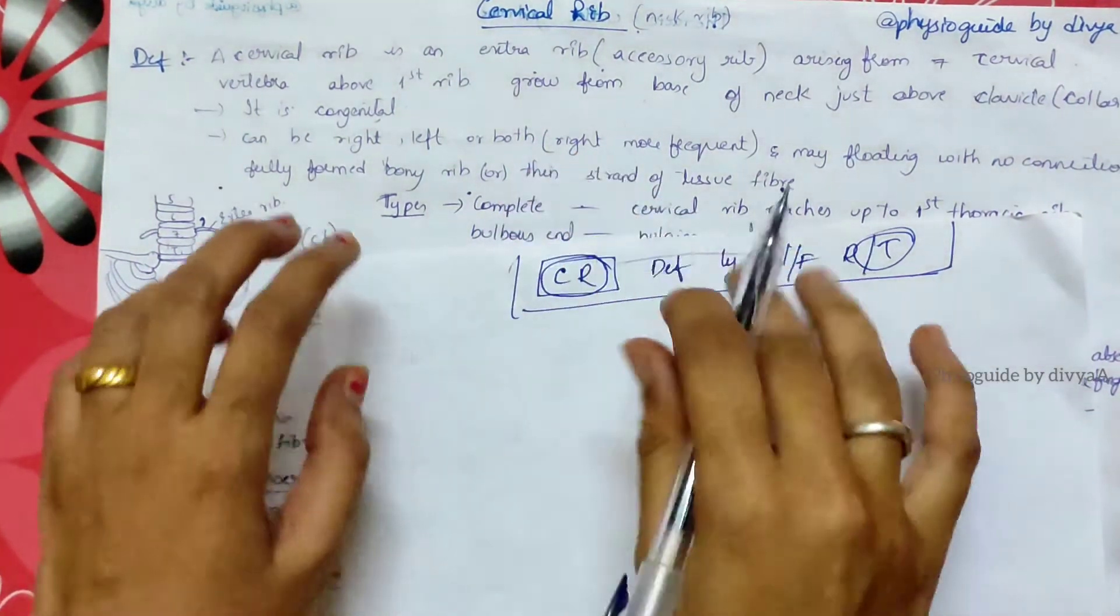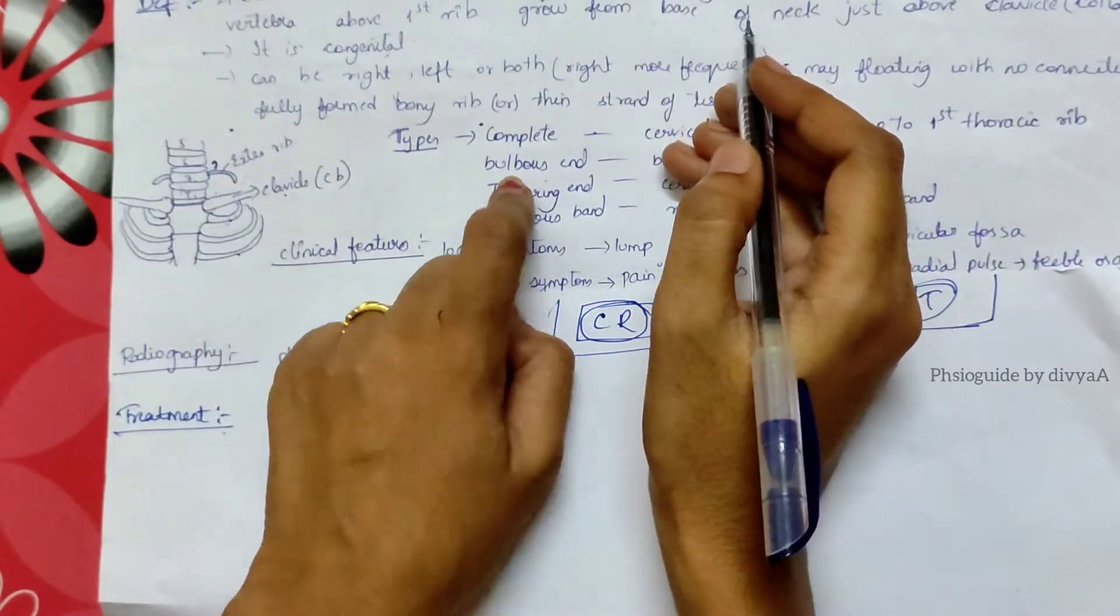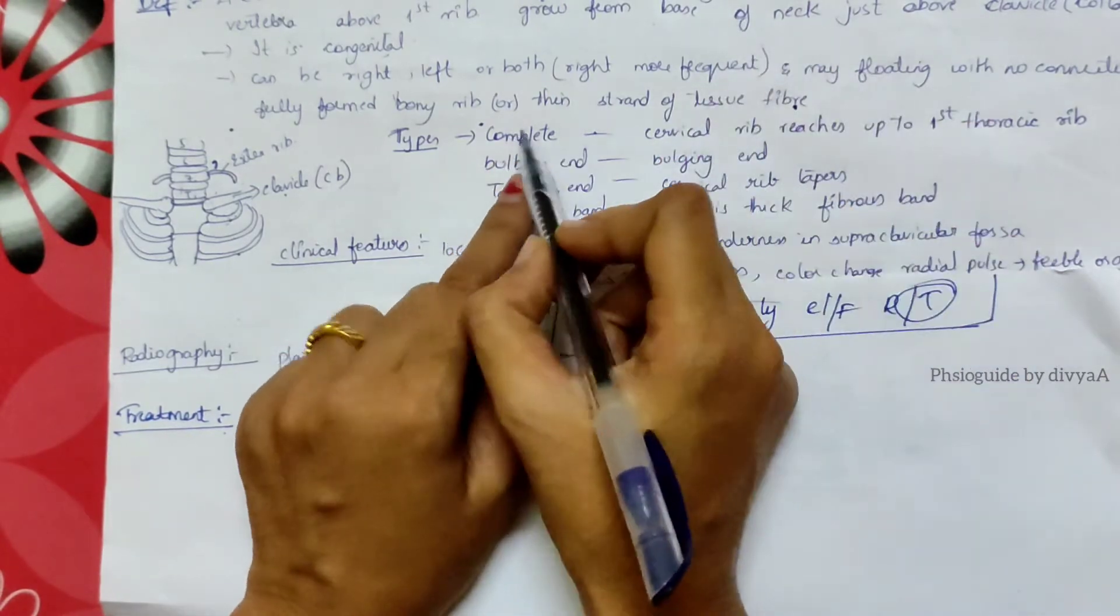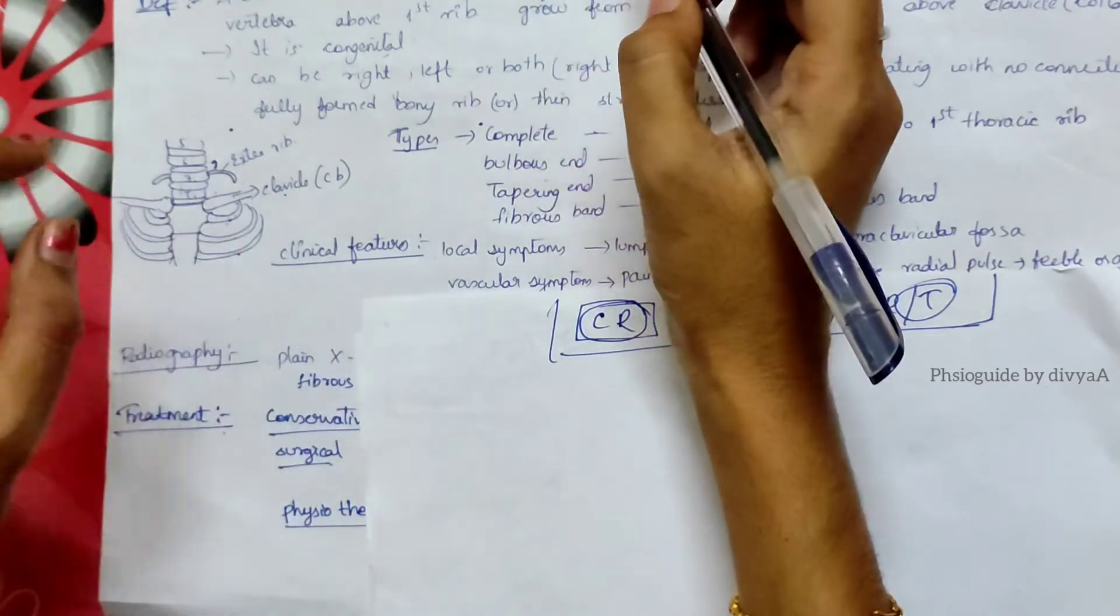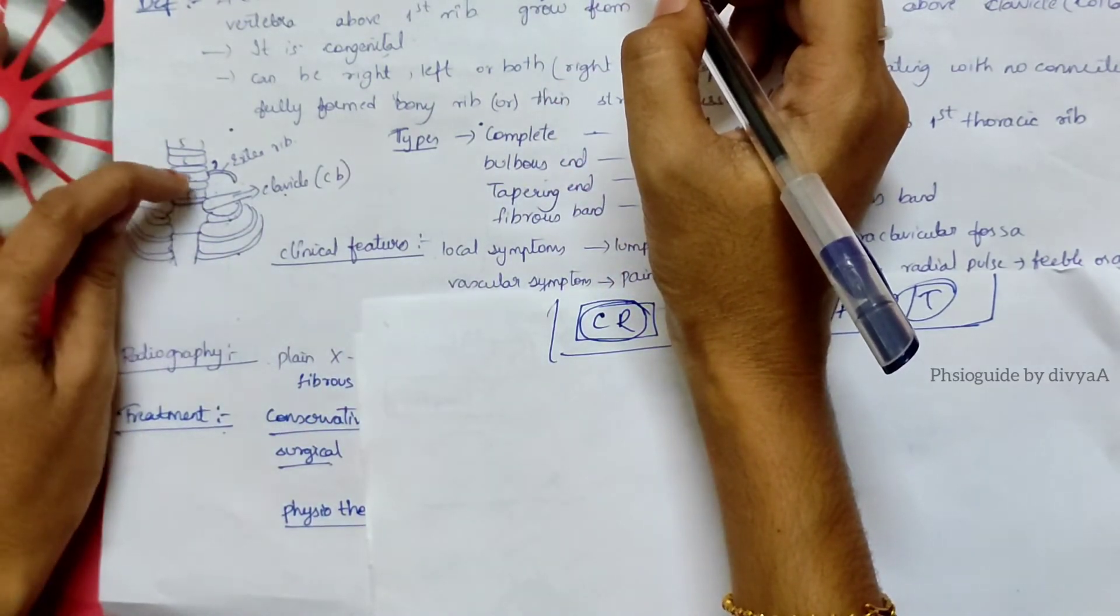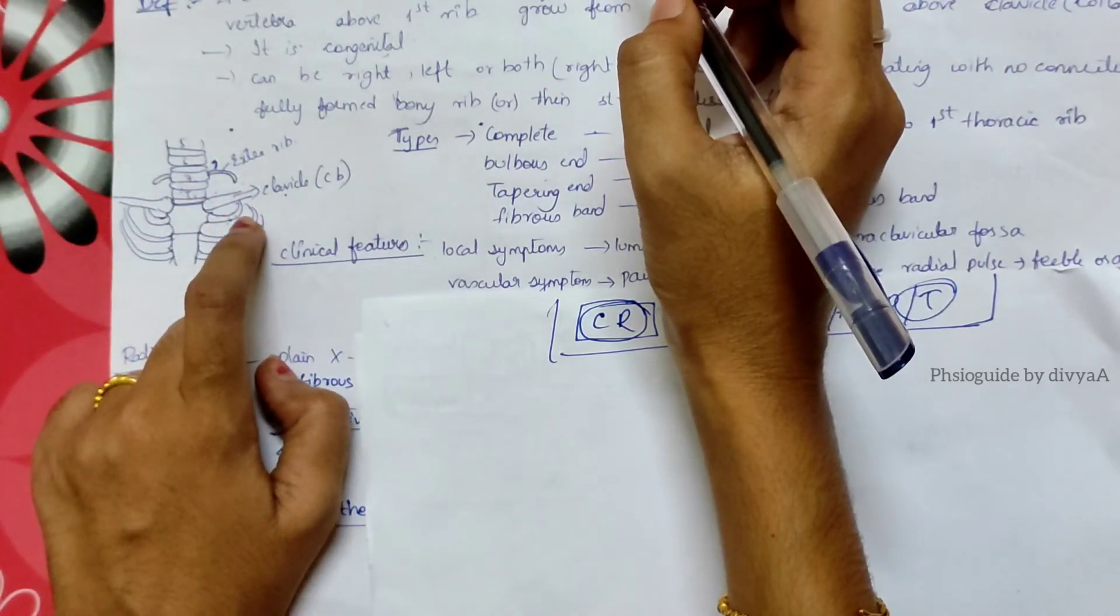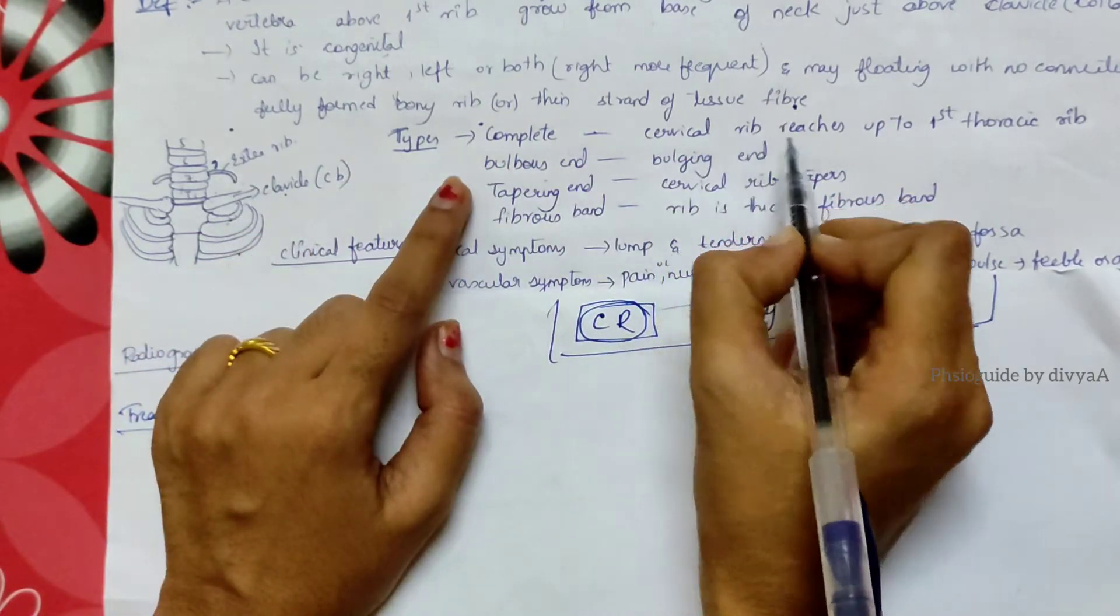Now what are the types? There are four types: complete, bulbous, tapering, and fibrous band. What is complete? Complete means the cervical rib will be developed from the seventh vertebra and it will reach to the first thoracic rib.